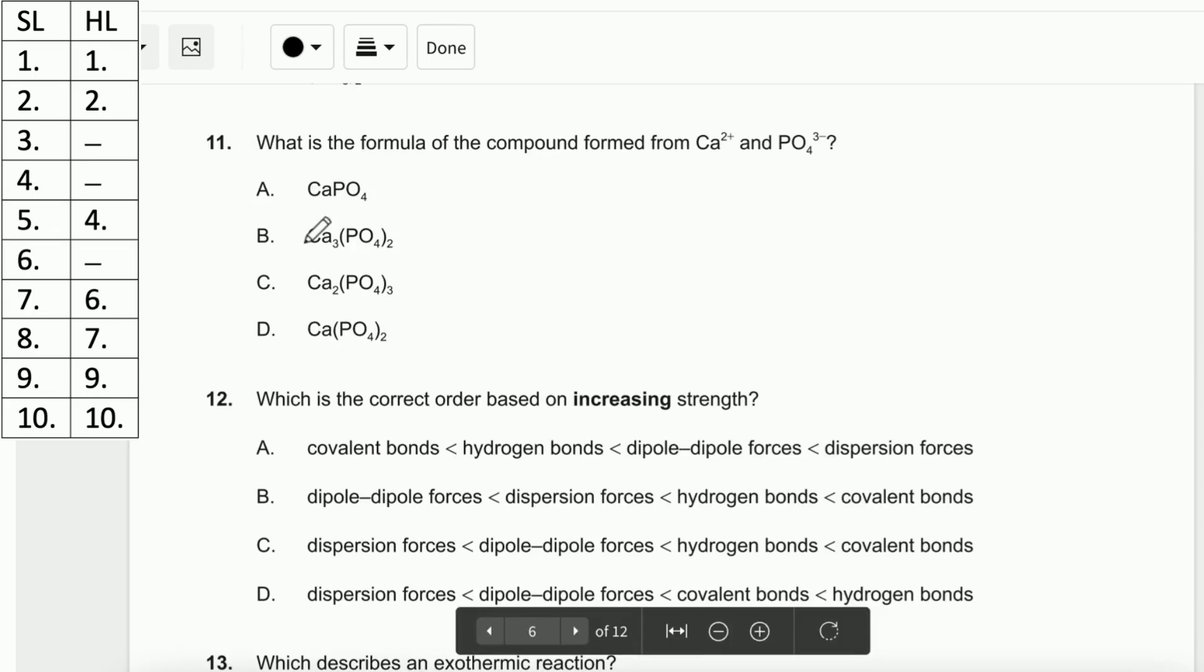Question number 11. What is the formula of the compound formed from Ca2+ and PO4 3-? We can use the criss-cross method. So 2+ will go down here, 3- will go down here. It becomes Ca3(PO4)2. The answer is B.